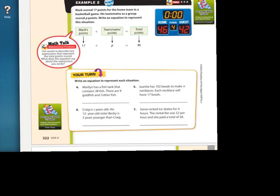You're going to have to understand how to write equations. Here's example 2. This is what it's going to be like. It says, Mark scored. Hey, Mark was just in here. Mark scored 17 points for the home team. So we're looking at these right here. Mark scored 17 points for the home team in a basketball game. His teammates, as a group,